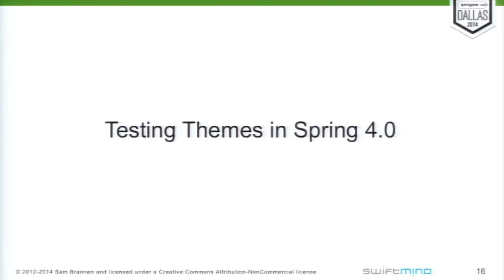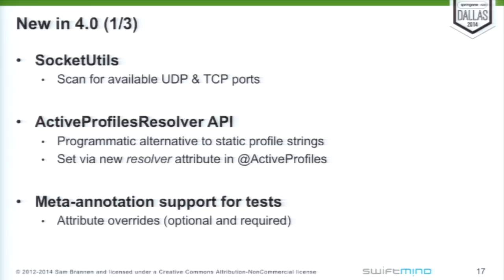So that's it for the quick review. Now we'll talk about the testing themes in Spring 4.0. First up, we have SocketUtils — this basically allows you to scan for available UDP and TCP ports. We'll see more details about that later. We also have the ActiveProfilesResolver API — a programmatic alternative to static profile strings like we saw before with the static 'dev' string. Basically, you set the new resolver attribute in @ActiveProfiles, and we'll see an example of that later on as well.